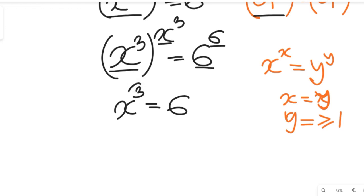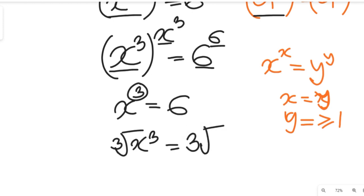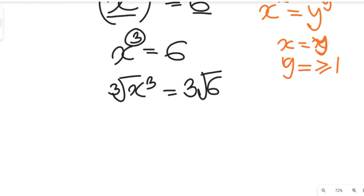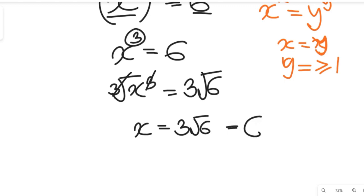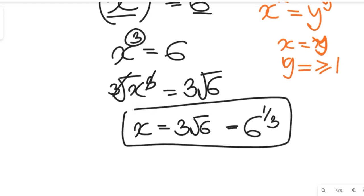All we need to do to clear the cube is to take the cube root of both sides. Taking the cube root of both sides, the cube root clears, and we have x equal to the cube root of 6, which can also be written as 6 to the power of 1 divided by 3. That is the solution to this exponential equation.